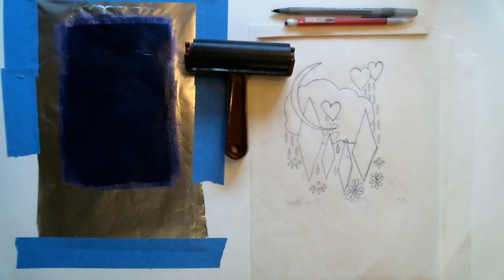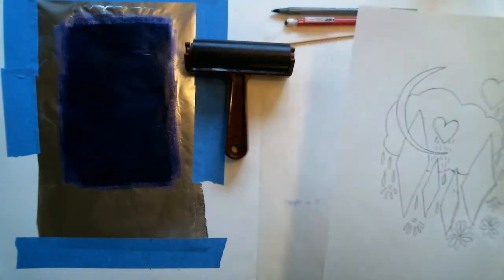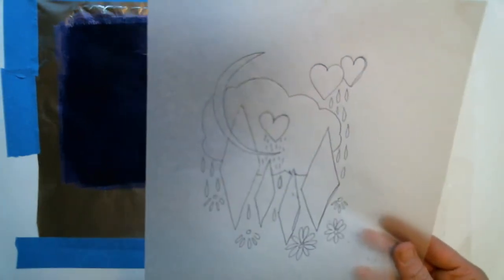Now a monoprint is a variable print that you can reproduce because you have a matrix. So here my matrix is a drawing on tracing paper.